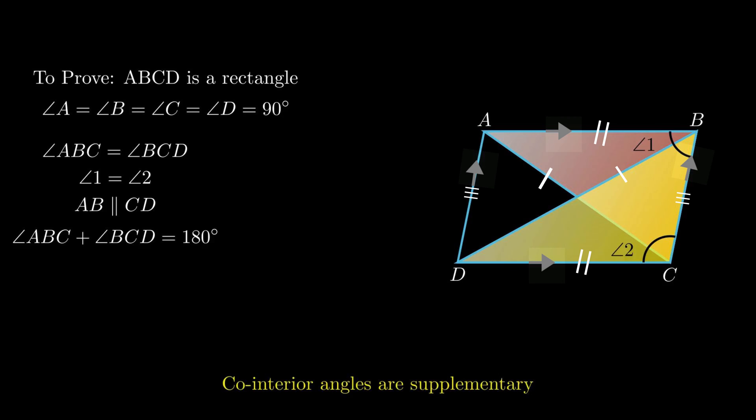the sum of angle ABC and angle BCD equals 180 degrees, as sum of co-interior angles is supplementary. Therefore angle 1 plus angle 2 equals 180 degrees. As angle 1 equals angle 2, therefore twice of angle 1 equals 180 degrees.